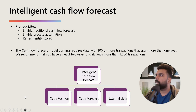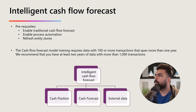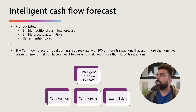A quick recap: if you are going to enable and use this feature, you need to understand the basic traditional cash flow forecast, enable process automation, and refresh your entities to train your model. This requires at least 1,000 transactions in the last two years, or 100 or more transactions spanning more than a year. You need to keep in mind all these prerequisites, and then we understood the concept of cash position in the cash forecast.